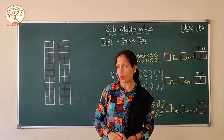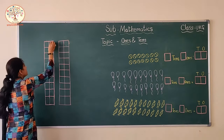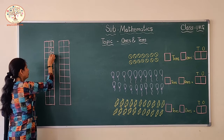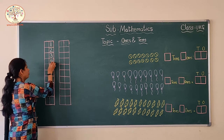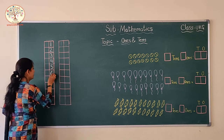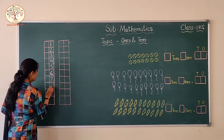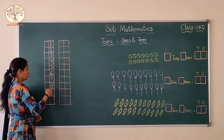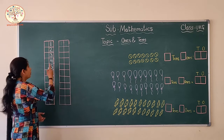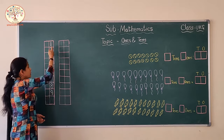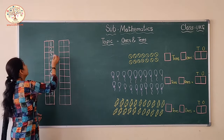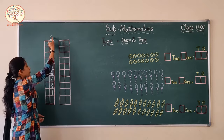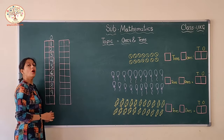When you start counting from 1, you write 1, 2, 3, 4, 5, 6, 7, 8, 9. These are all 1-digit numbers. Only 1 is alone, 2 is alone — these are 1-digit numbers, and they live in the 1s house. The house name is 1s.